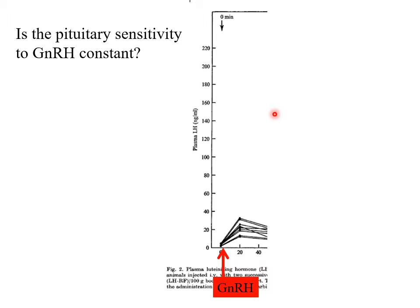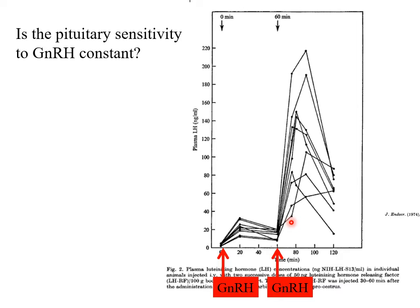Here we see a typical experiment done on a rat, looking at plasma LH on the vertical axis against time in minutes. At one point a single injection of synthetic GnRH was injected into the animal and we can see the LH response. Then a second dose of GnRH was injected, and what we'd expect is a response very much like the first. But what happened? It gave a much, much bigger response. It looks as though the first dose of GnRH had somehow changed the pituitary's responsiveness to allow it to become much more responsive to the second dose.